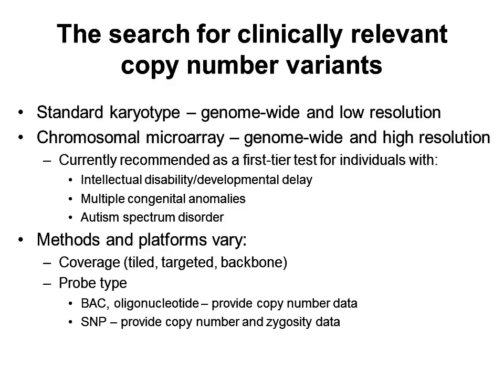Also, due to the increased detection rate of clinically significant copy number variants, microarray is now recommended as a first-tier test for individuals with intellectual disability, developmental delay, congenital abnormalities, and/or autism spectrum disorder. There are several types of microarray platforms that are commercially available, which utilize different probe strategies differing in terms of the probe coverage — so the choice of where the probes are placed in the genome — and the probe type.